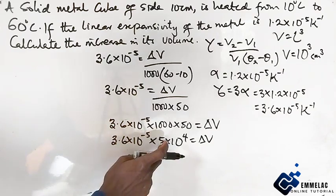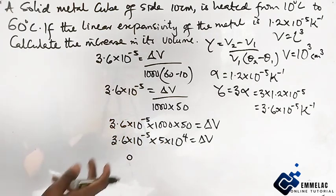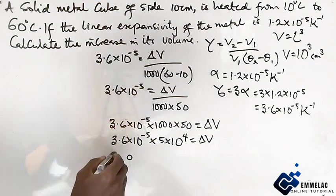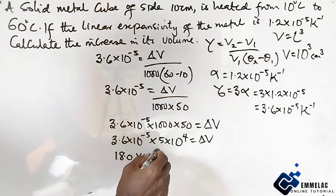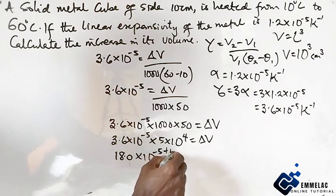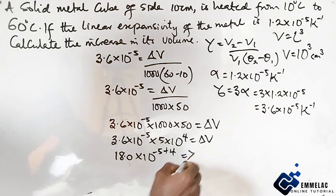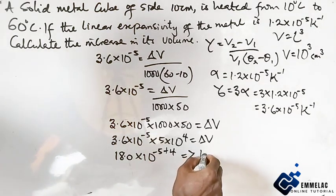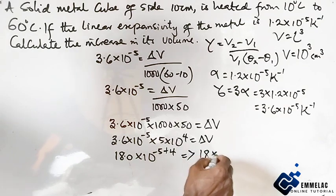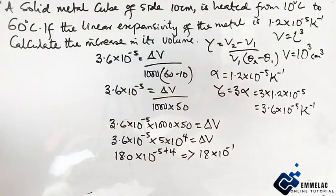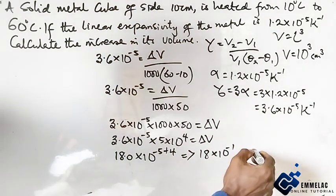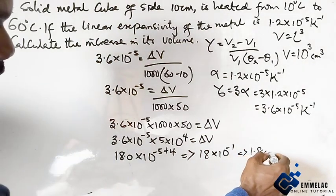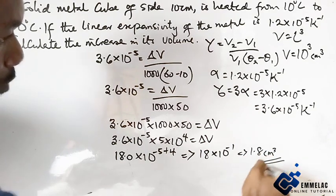This times this here, we have 3 times 3 is 9, then 3 times 6 is 18. One decimal place, then times 10 raised to power minus 5 plus 4. This will give us 18 times 10 raised to power minus 1, which gives us 1.8 centimeters cube.